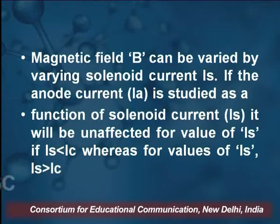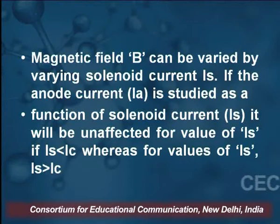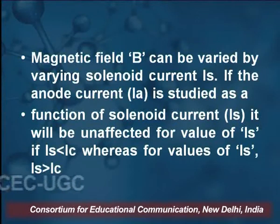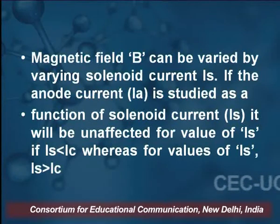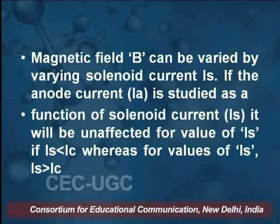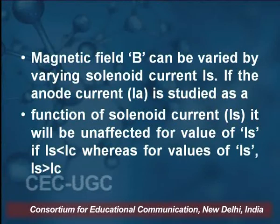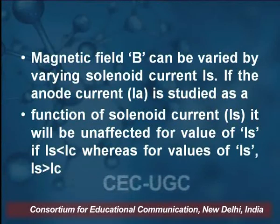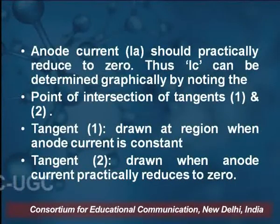The magnetic field B can be varied by varying the solenoid current Is. If the anode current Ia is studied as a function of the solenoid current, it will be unaffected when Is is less than Ic, the critical current value. When Is is greater than Ic, the anode current should practically reduce to zero.